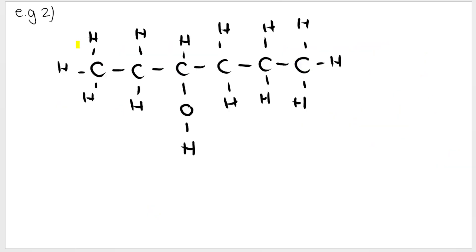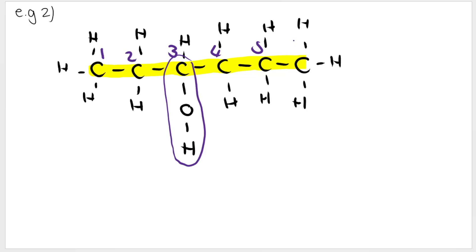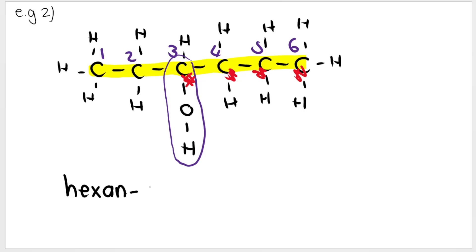Let's try this example. We find the main chain: one, two, three, four, five, six carbons, and the carbon attached to the OH group is part of the main chain. We number to give the OH the lowest number: one, two, three, four, five, six — numbering it the other way would put the OH on carbon four, which is higher than three. So it's six carbons — hex — and it's alcohol, so we take hexane, remove the E, add 3-ol: hexan-3-ol.